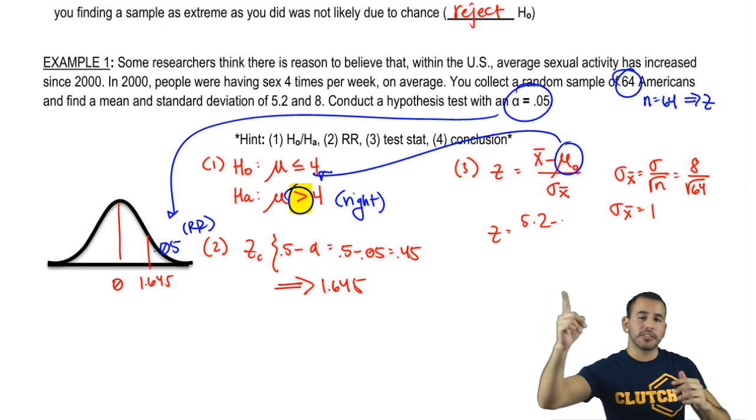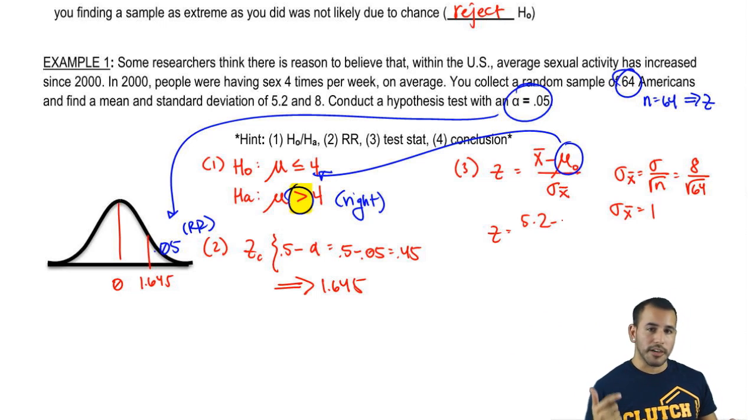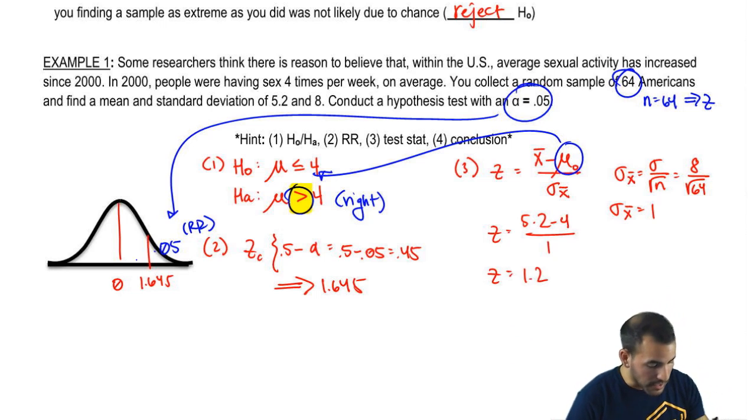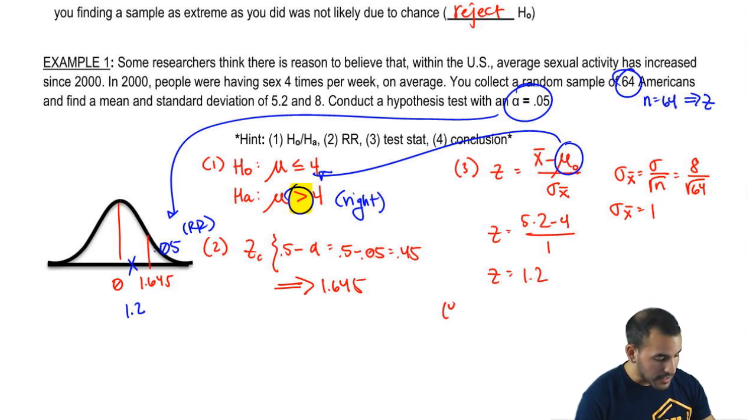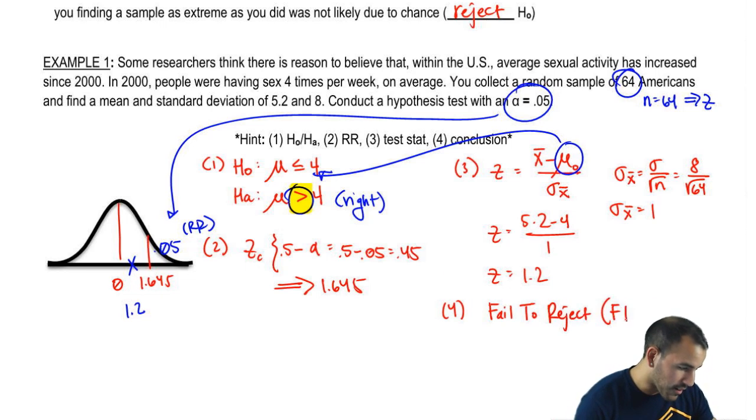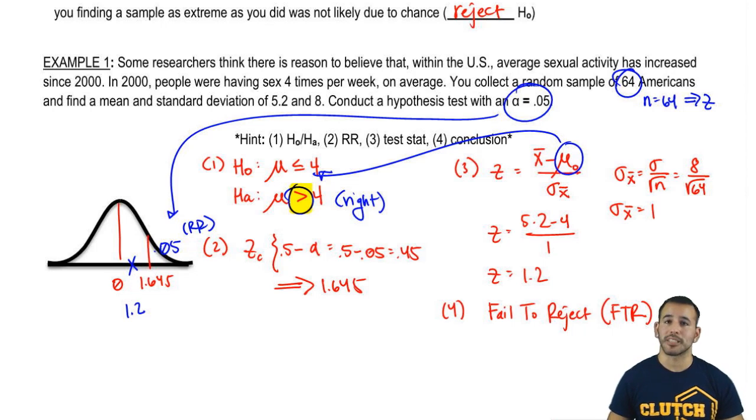Now what we do with that is go ahead and see where that 1.2 lies with respect to our distribution. So that 1.2 lies within our non-rejection region. So technically not in the rejection region. So what we go ahead and say is, from here on out I'm really just going to write FTR or R. So that represents fail to reject or reject. Since our 1.2 lies outside of the rejection region, we're going to go ahead and fail to reject our null hypothesis.